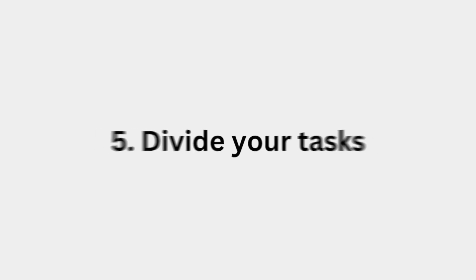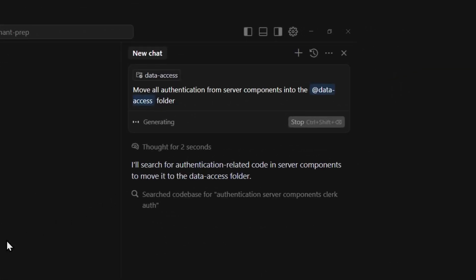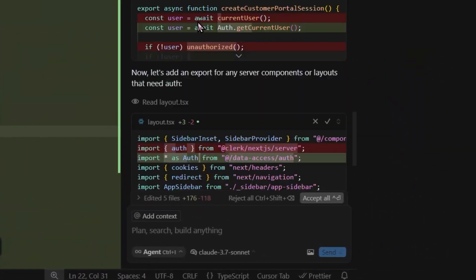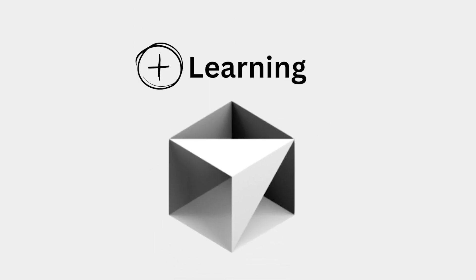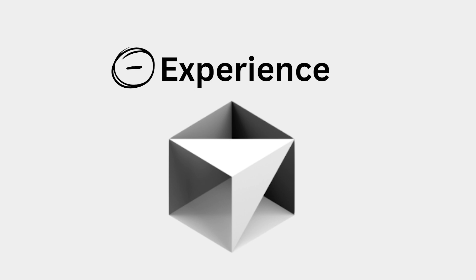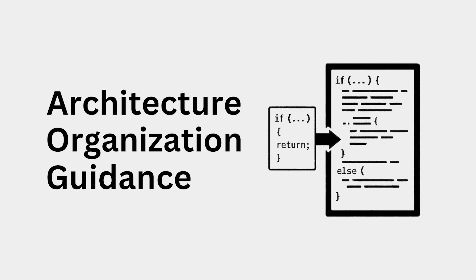Tip number 5 is to divide your tasks. AI is really good at small, specific tasks with clear instructions. If you give it too large a task, it will drift off and just generate chaos. When you notice this happens, revert the changes and try again with a smaller, more specific task. You can imagine AI as a really diligent junior developer who can read docs at lightning speed, but doesn't bring much experience or deep understanding. So your job as the developer is to bring the high-level thinking and understand how the different pieces fit together.